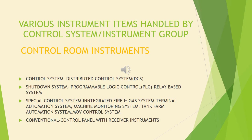Control room instruments include: distributed control system (DCS), shutdown system/programmable logic controller (PLC) and relay-based systems. Special control systems include integrated fire and gas system, terminal automation system, machine monitoring system, tank farm automation system, and move control system, as well as conventional control panels with receiver instruments.